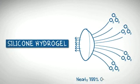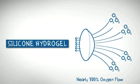Silicone hydrogel allows nearly 100% of available oxygen to reach your eye, almost as much as without lenses. And its durability can allow lenses to be thinner.